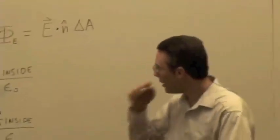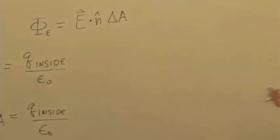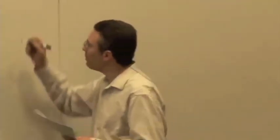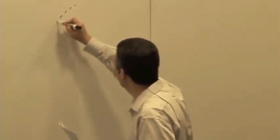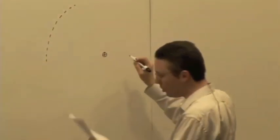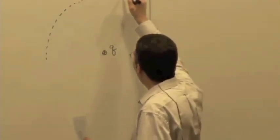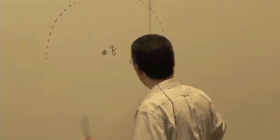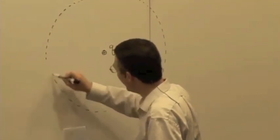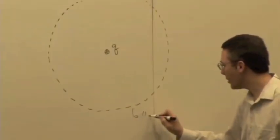One thing to think about is: where does this constant epsilon-naught come from? We know that the flux has something to do with the charge, but how do we know it's the correct constant? Well, one way you can prove that is to imagine you have just a point charge — here's a single positive charge, charge Q — and I'm going to imagine it's at the center of an imaginary Gaussian surface which is spherical, sometimes called a Gaussian sphere.